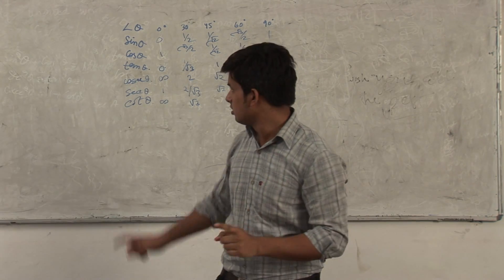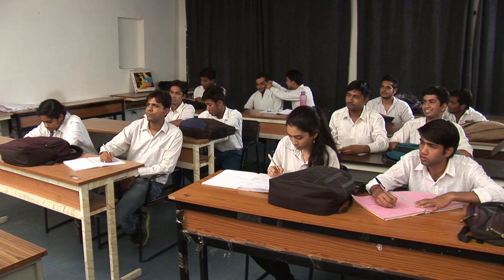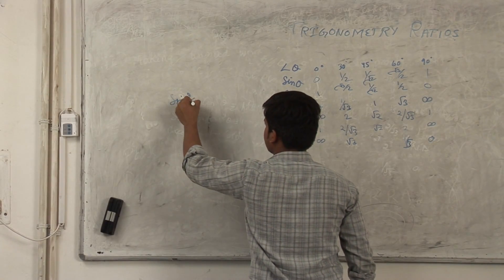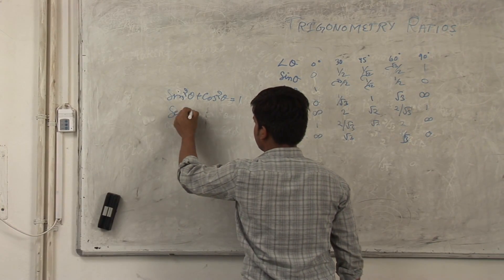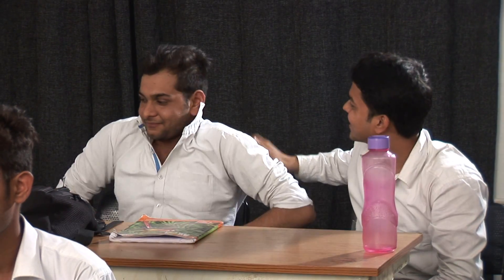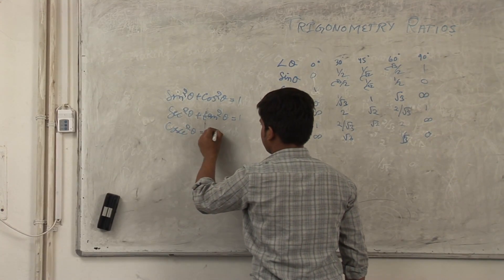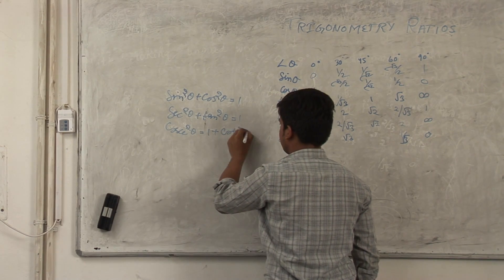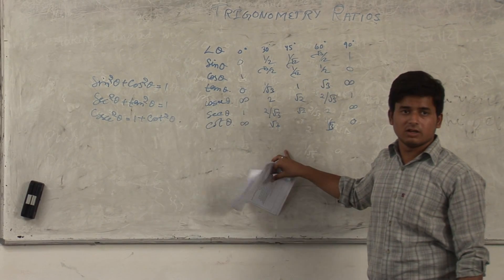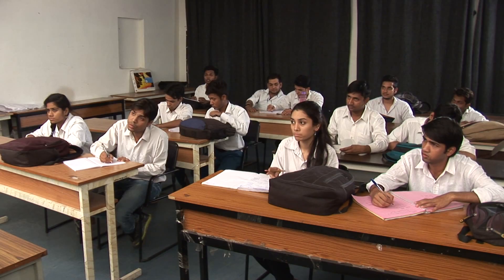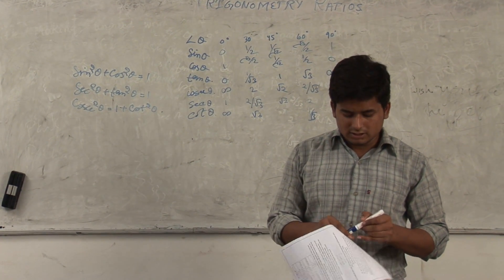Everyone should remember these. I have one identity — I will also make everyone remember it. This is the three equations and this is the table. Tomorrow we will test everyone and we will remember everything. Okay? Let's see. Tomorrow we will meet you.